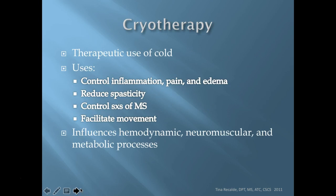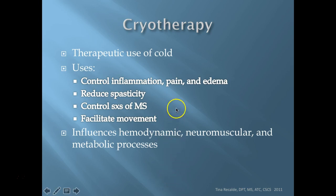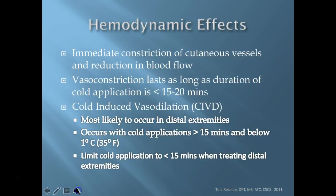So why do we use cold therapy? We use it for inflammation and edema, and also as an analgesic to decrease pain. It reduces spasticity, which is why it can help control symptoms of multiple sclerosis. It can facilitate movement - with an ice massage you can do a quick stroke to a muscle to help facilitate it to fire. Cold does the same thing as heat therapy in that it influences the hemodynamic, neuromuscular, and metabolic processes, just in a different way.